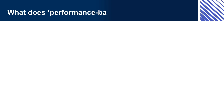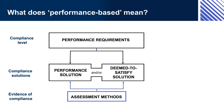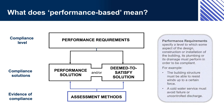What does performance-based mean? As a performance-based code, the NCC performance requirements represent the mandatory compliance level of performance that a building must achieve across many different aspects, such as structural integrity, fire safety, health and amenity, access and egress, etc. Buildings must comply with these requirements. Performance requirements specify a level to which some aspect of the building design or construction must perform in order to be compliant. For example, the building structure must be able to resist winds up to a certain force.